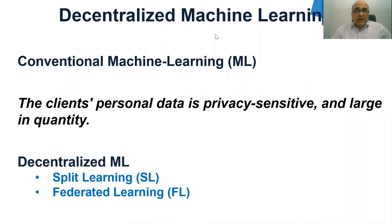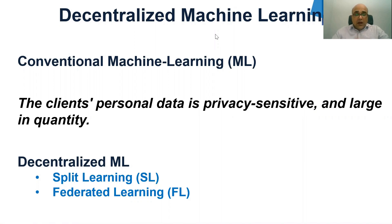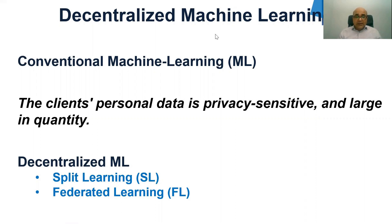As you know, in conventional machine learning algorithms, models are usually developed in a centralized setting. That is, the data generated by local clients are firstly aggregated into a server or PC, and then the training is performed on the server or PC. However, the client's personal data is privacy sensitive and can be large in quantity — for example, healthcare data or video data — which disqualifies centralized machine learning methods from sending local data to the server. Federated learning and split learning are distributed collaborative machine learning techniques that decouple model training from the need for direct access to the raw data of clients.